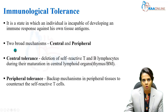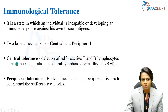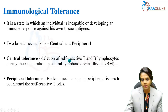There are two broad mechanisms for developing tolerance: central tolerance and peripheral tolerance. In central tolerance, T cells and B cells undergo maturation in the central lymphoid organs — the thymus and bone marrow. In central tolerance, there occurs a deletion of self-reactive T and B lymphocytes during their maturation in these central lymphoid organs.